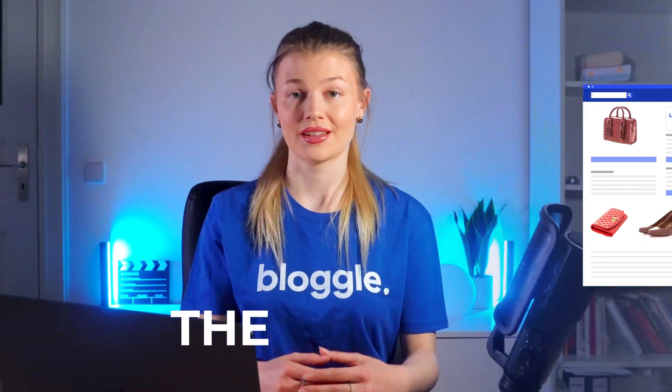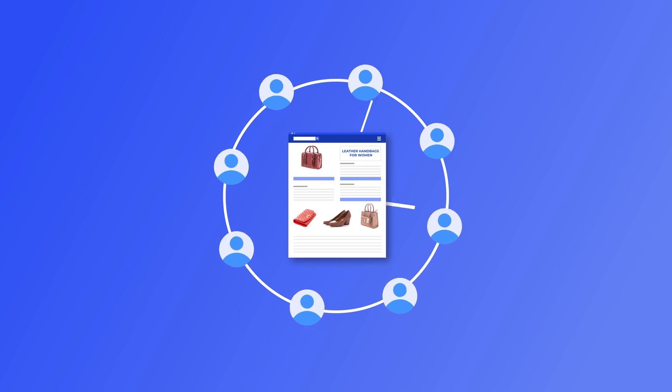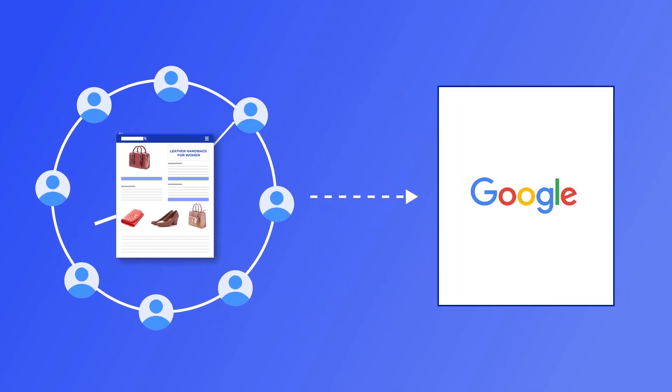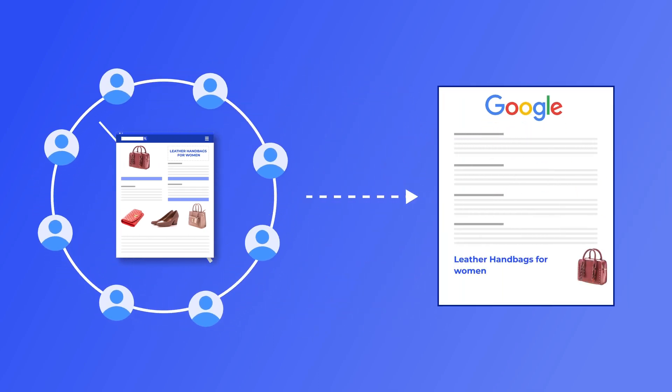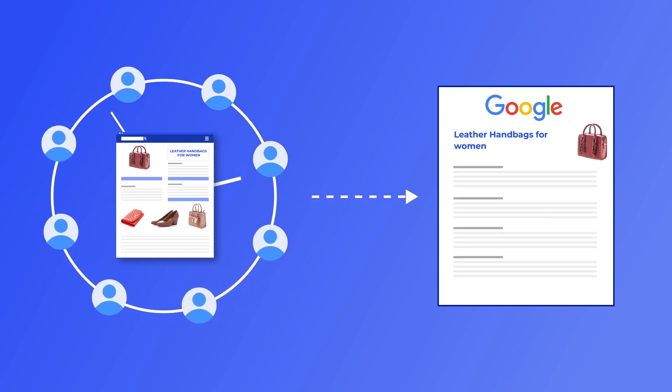Imagine you published a blog post about leather handbags for women. A related post would probably be about leather purses for women or matching leather shoes and handbags. Your readers will spend more time on your site, signaling to Google that you must be providing top-notch content worth ranking high on SERPs. This in turn provides your site with organic traffic that you can convert into sales.